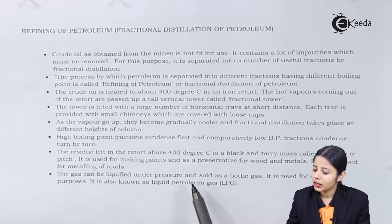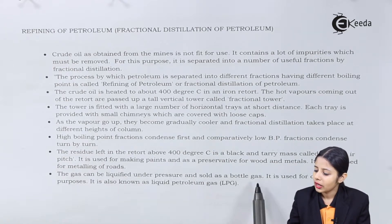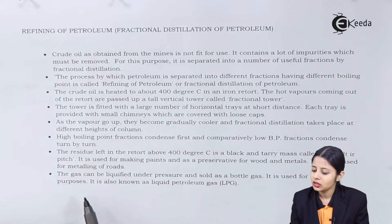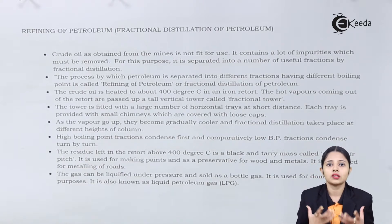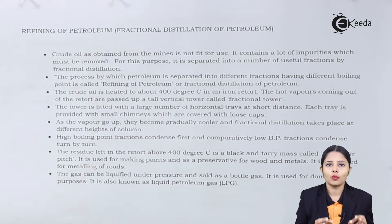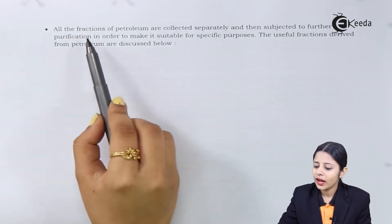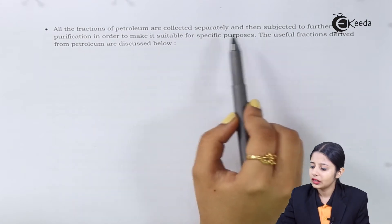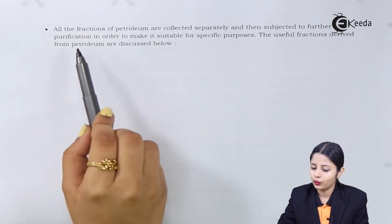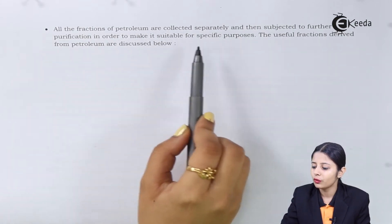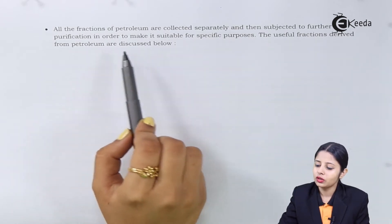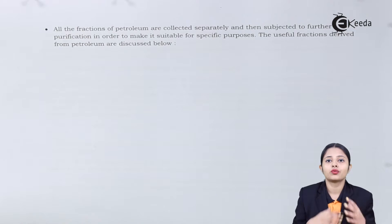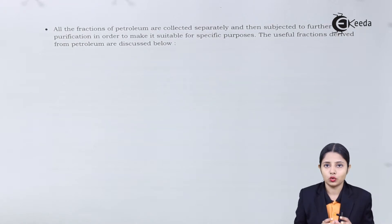Gas can be liquefied under pressure and sold as bottled gas. It is used for domestic purposes and is also known as liquid petroleum gas — LPG. This is the cooking gas that we use. All the fractions of petroleum are collected separately and then subjected to further purification in order to make them suitable for specific purposes.